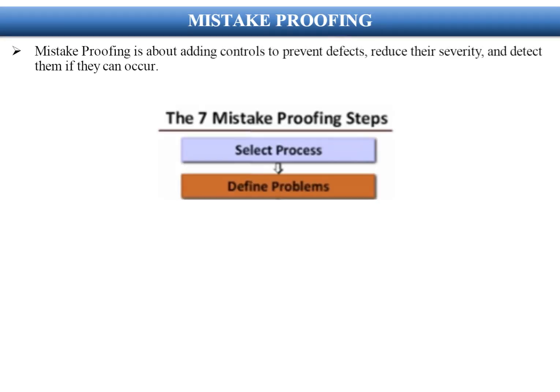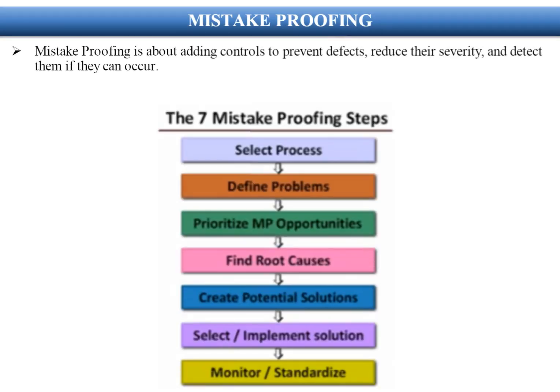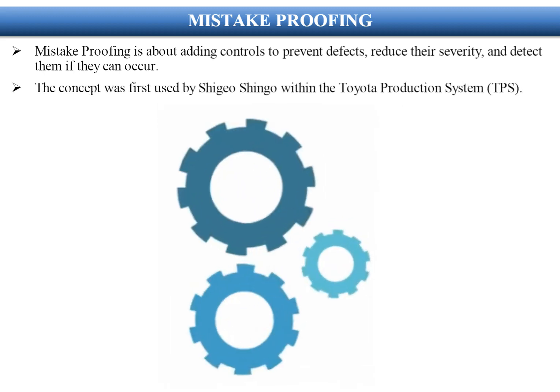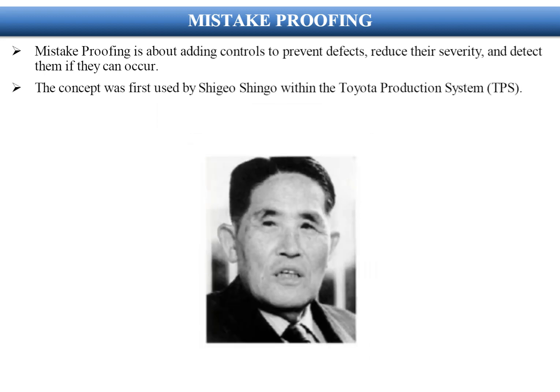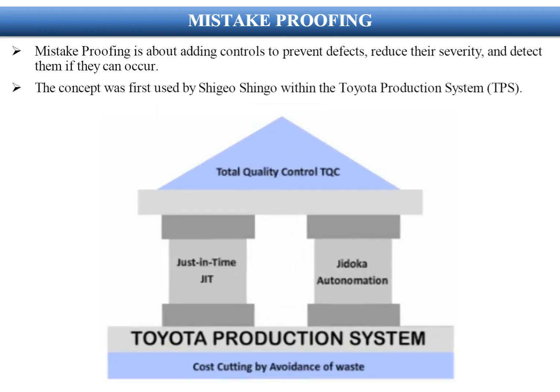Mistake Proofing is about adding controls to prevent defects, reduce their severity, and detect them if they can occur. The concept was first used by Shigeo Shingo within the Toyota Production System, TPS.